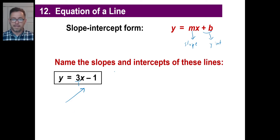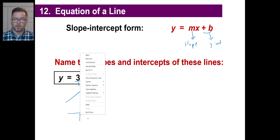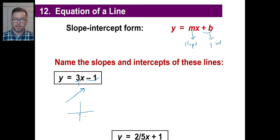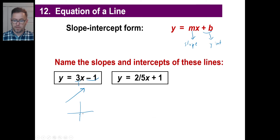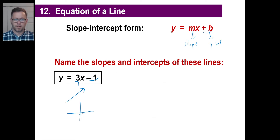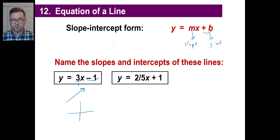The y-intercept is right there. So that means if this is the graph, the y-intercept — you go, oh, there's my y-intercept right there. It goes right there, and then it goes up from there. The second one — what's the y-intercept of this line?